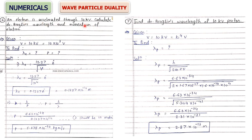Another type: an electron is accelerated through 10 kilo-volts — here potential is given, not energy. Convert 10 kV to volts (× 10³). To find lambda of electron with potential given, use the direct formula: λ_electron = 12.27 / √V (result in Angstroms). To convert to meters, multiply by 10⁻¹⁰. Then use λ = h/p to find momentum p.